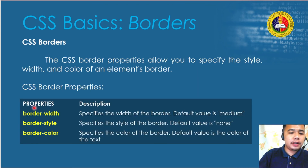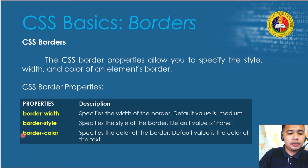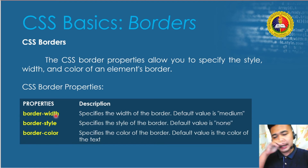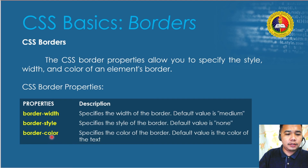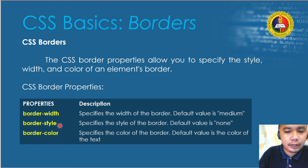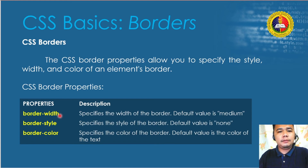You can also change the border color using border-color, and the border width using border-width with values in pixels, points, etc. For color, use a color name, hexadecimal, or RGB value.